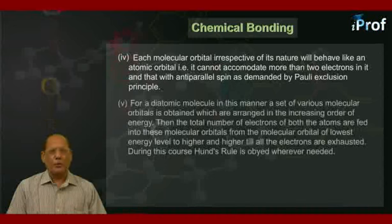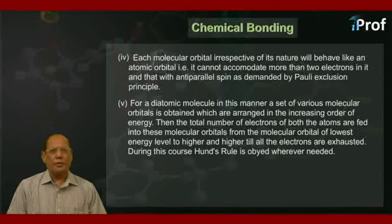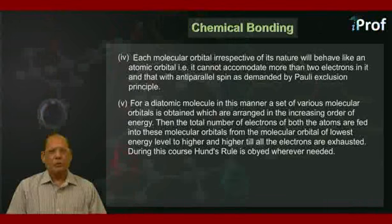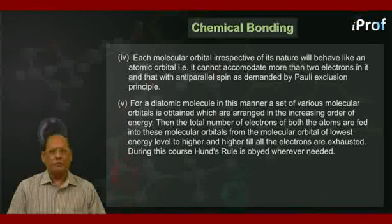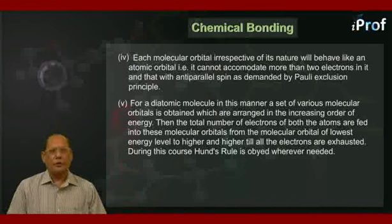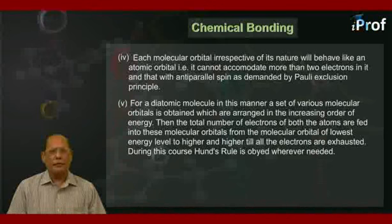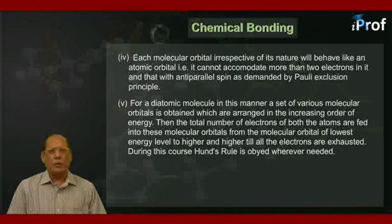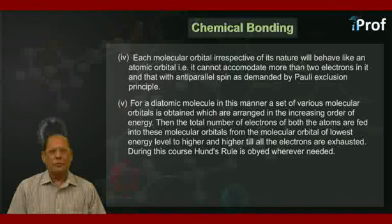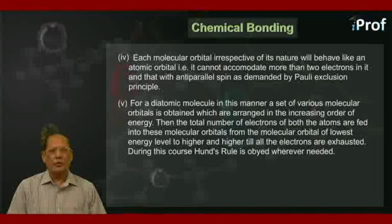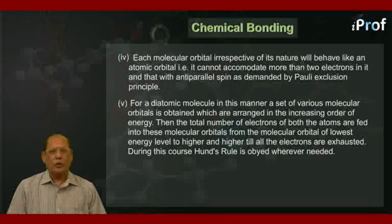The fifth point is, for a diatomic molecule in this manner, a set of various molecular orbitals is obtained, which are arranged in the increasing order of energy. Then the total number of electrons of both the atoms are fed into these molecular orbitals from the molecular orbital of lowest energy level to higher and higher till all the electrons are exhausted. During this course, Hund's rule is obeyed wherever needed.